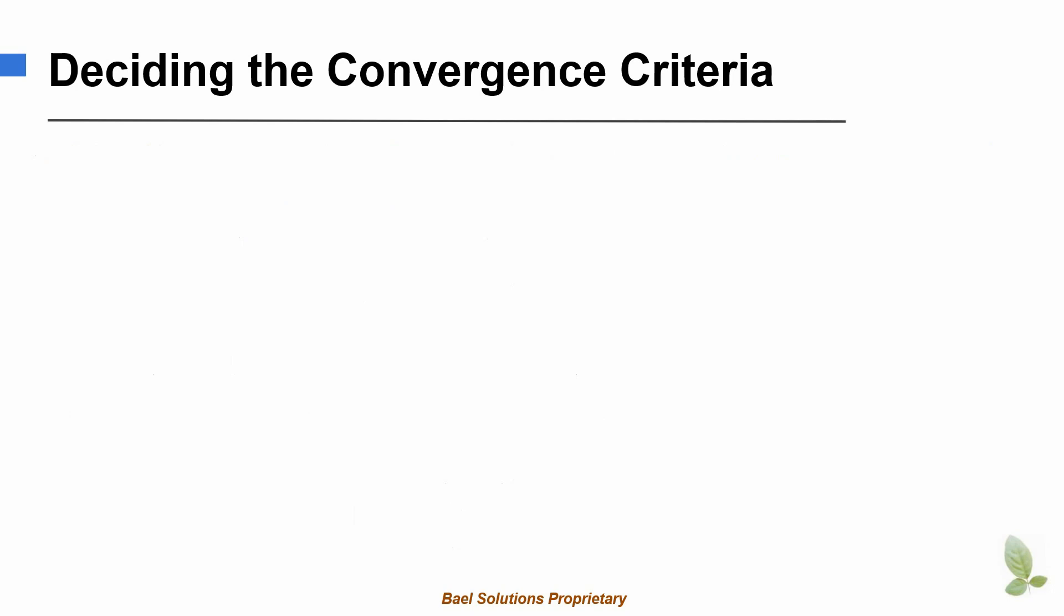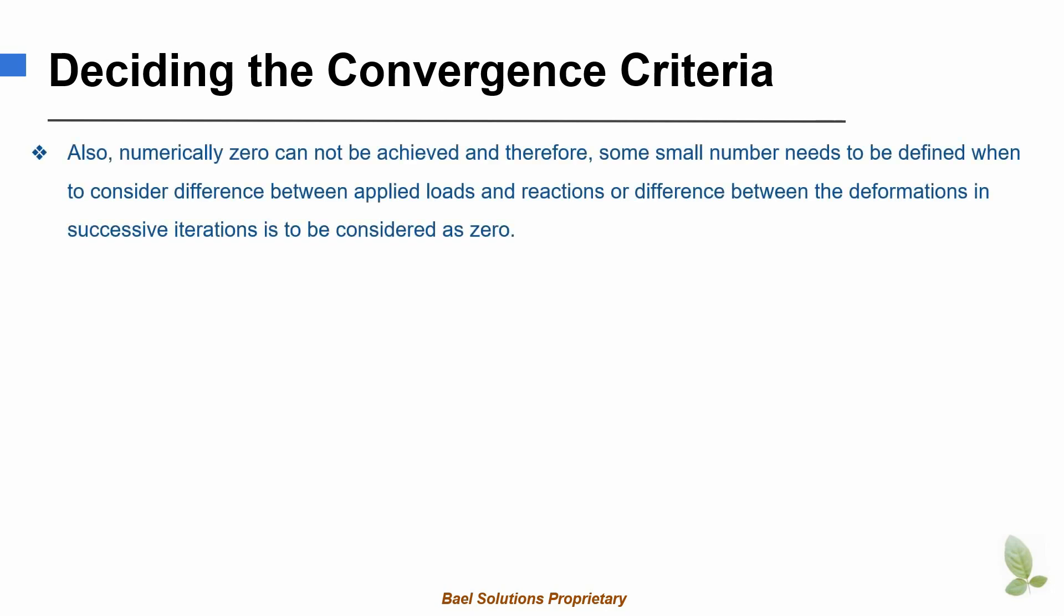In the last slide, we saw how ANSYS or other finite element software calculate the norm of a residual vector to check if it is meeting the convergence criteria. Ideally, the norm value should be zero. However, in numerical problems, it is impossible to reach the value zero.